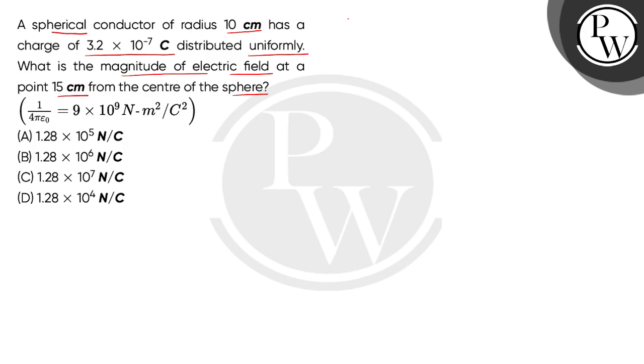So bichon given है हमें इस question में एक sphere. इस sphere की radius है 10 cm. So this is 10 multiplied 10 to the power minus 2 meter. और इस पर charge है जो की uniformly distributed है 3.2 multiplied 10 to the power minus 7 coulomb. अब bichon हमें इस sphere की center से 15 cm याने की 15 multiplied 10 to the power minus 2 meter पर find करना है electric field.